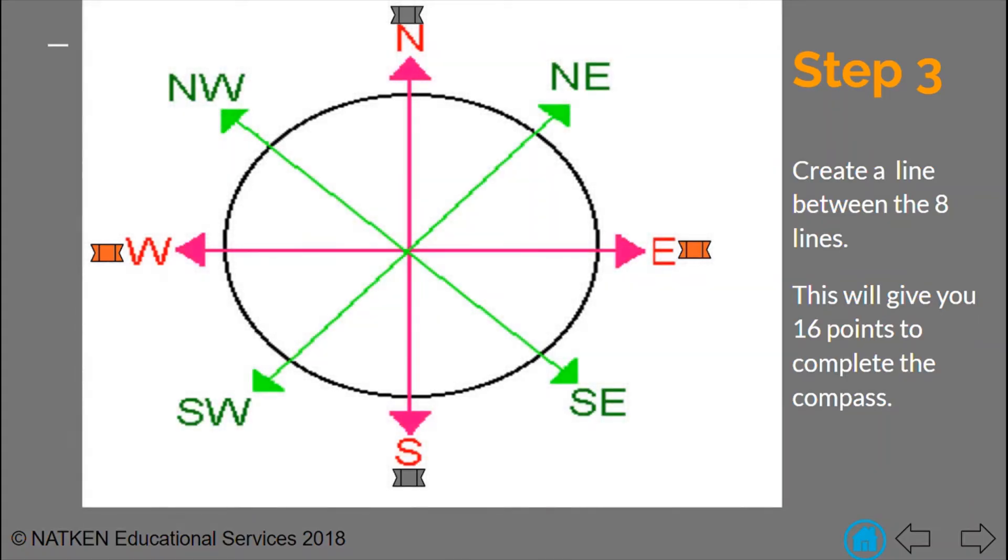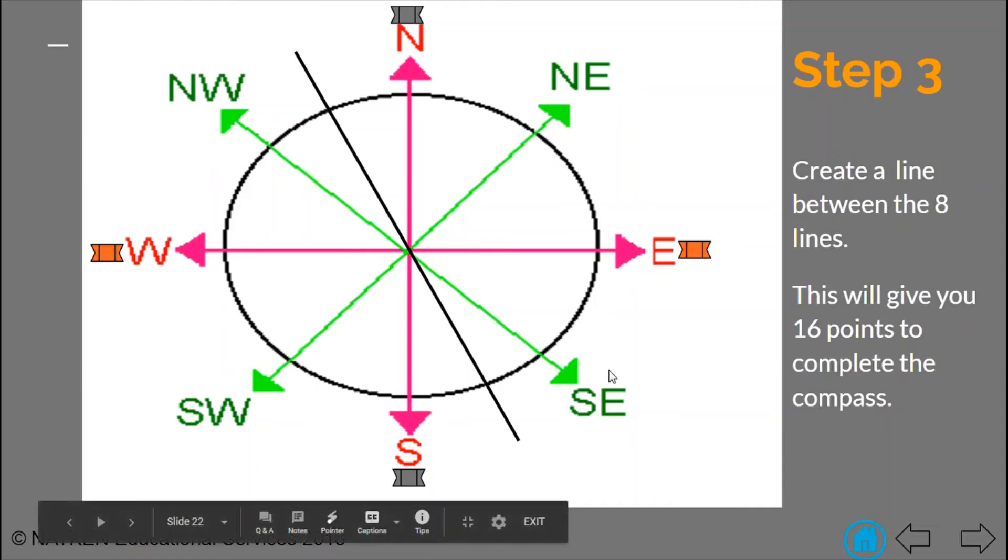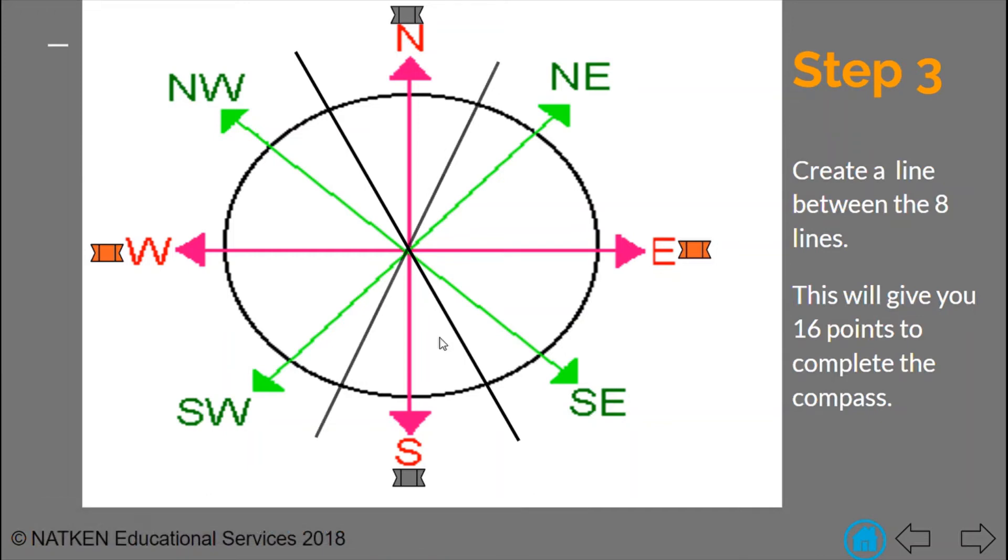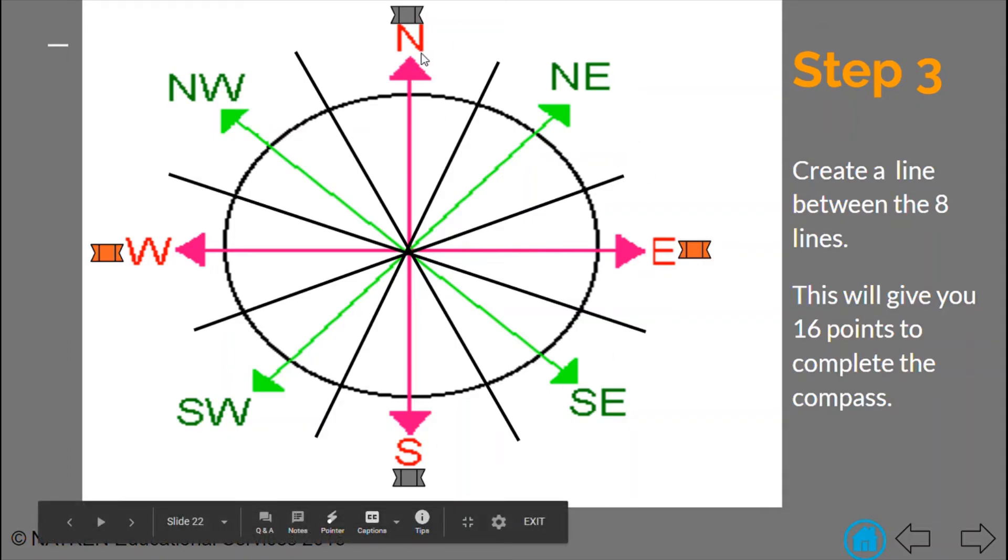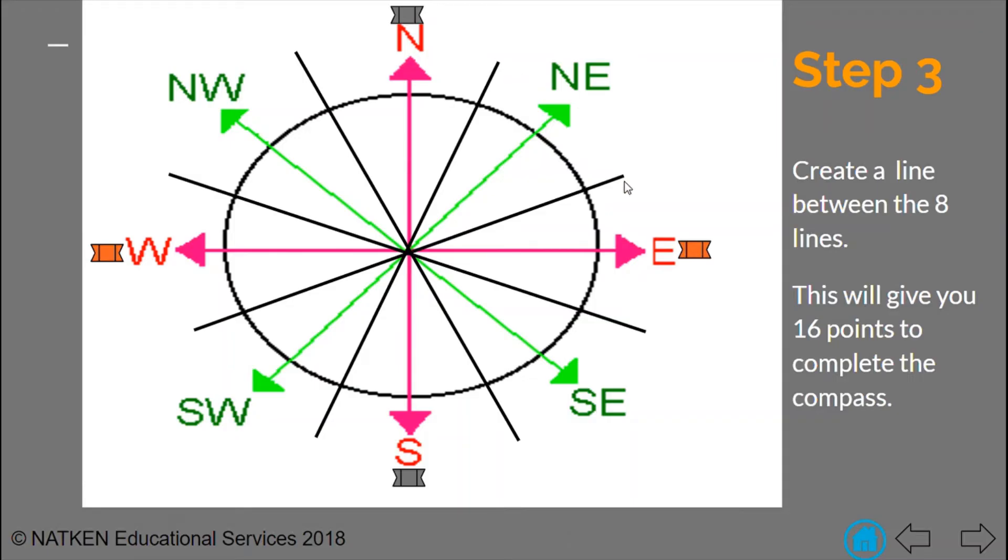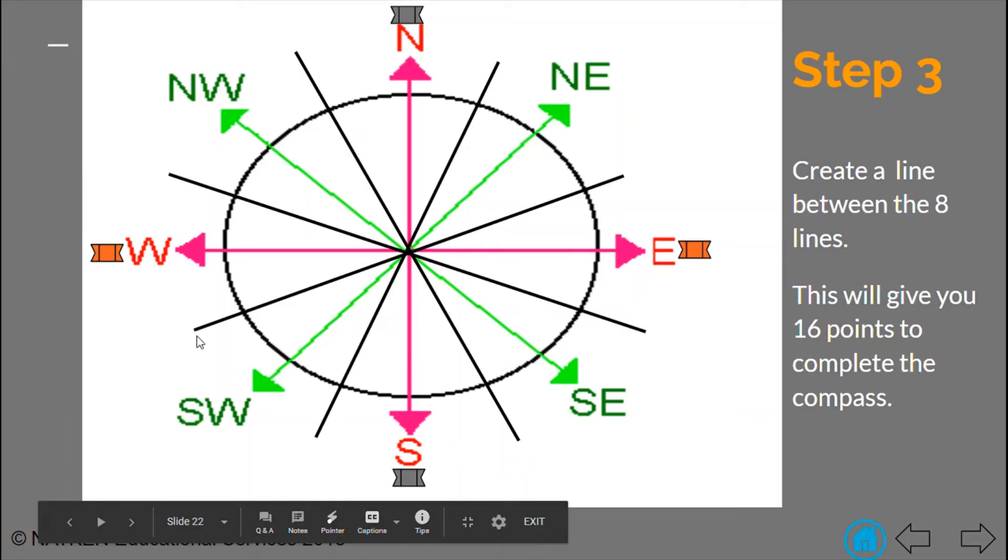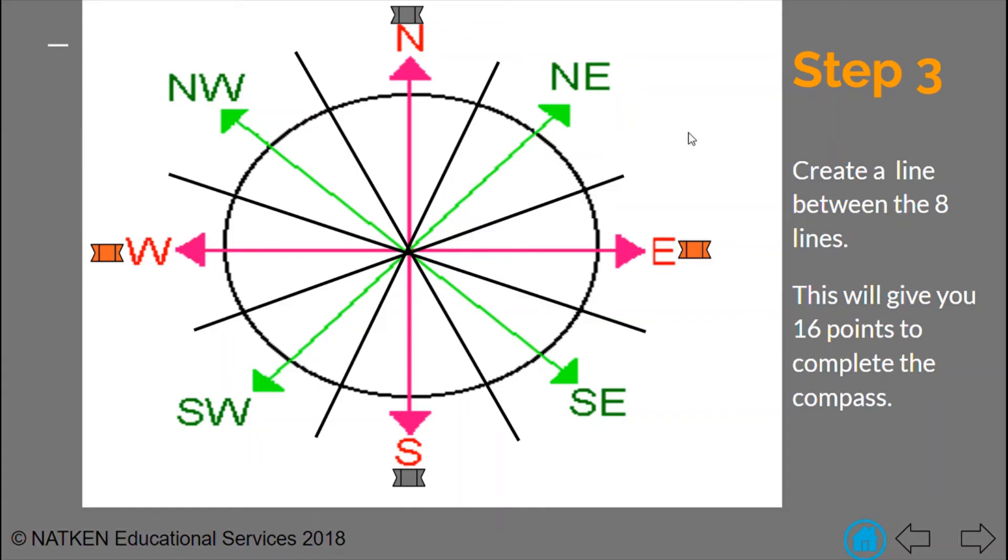Step three we have the eight points. What we do next we create a line between each point exactly like we did the first time. So we put in a line there between north and northwest and it extends across to south and southeast. After we do that with all of our points we will end up with a total of 16 points going all the way around. So if you look closely you will see that there is a blank space in between all of the points that we already know. Just like we did before we need to put the two points that we know together so that we can create the point that we do not know.